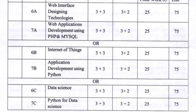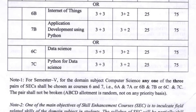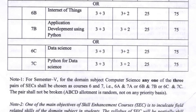Now we have the paper titles. 6A paper title is Web Interface Designing Technologies. 7A is Web Applications Development Using PHP and MySQL. In Section B, 6B paper title is Internet of Things. 7B paper title is Applications Development Using Python.